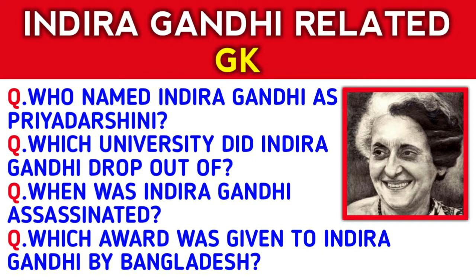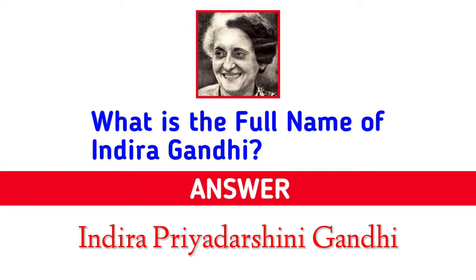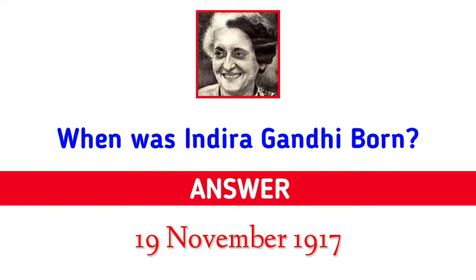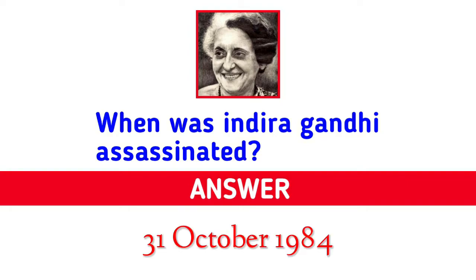What is the full name of Indira Gandhi? Answer: Indira Priyadarshani Gandhi. When was Indira Gandhi born? Answer: 19 November 1917. When was Indira Gandhi assassinated? Answer: 31 October 1984.